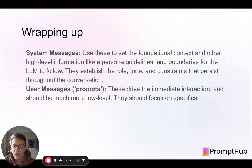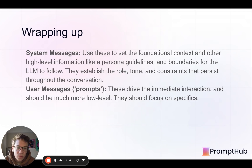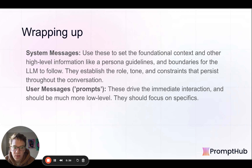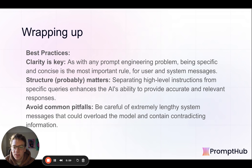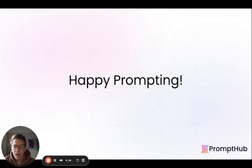Wrapping up: system messages should be used to set context and other high-level information — like setting a persona, tone, constraints, and things that will persist throughout the conversation if you're using a chatbot. If you're not, just set the guidelines for whatever generation you're looking for. The user message or prompt should really be focused on the immediate interaction — much more low-level, focused on the specifics. Clarity is key: separating high-level from low-level information will be helpful. Be careful of overly lengthy system messages — we've seen those be inefficient and end up being more confusing than helpful. That's it, thanks guys.